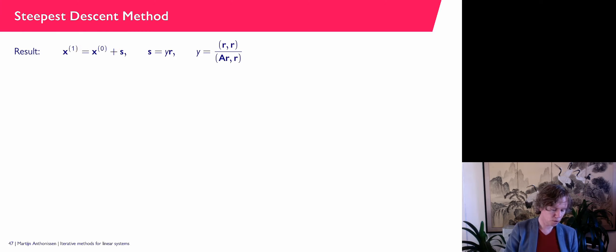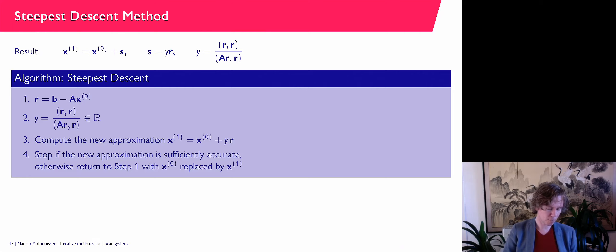This is called the steepest descent method. Our update is: x₁ = x₀ + y · r₀, where y is the computed scalar. So apparently this algorithm — called steepest descent — solves a linear system, provided you take sufficiently many iterations. You can probably imagine that for a million-by-million linear system, we're going to need quite a few iterations.